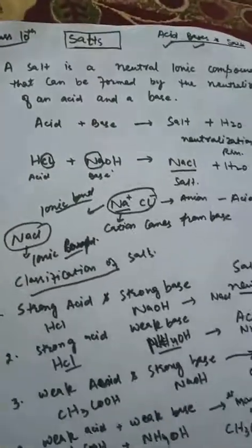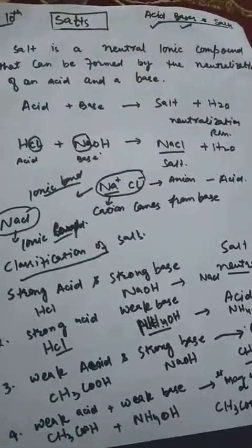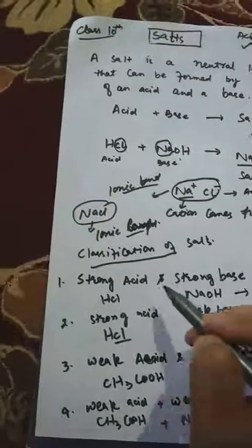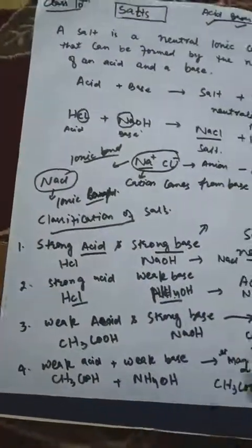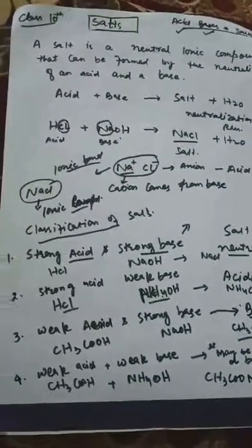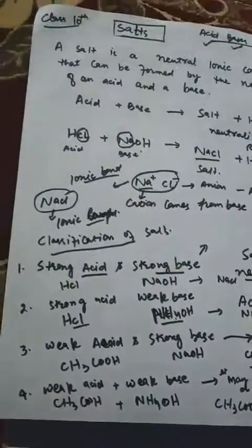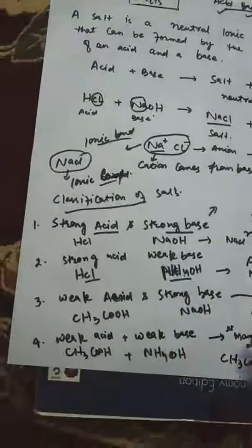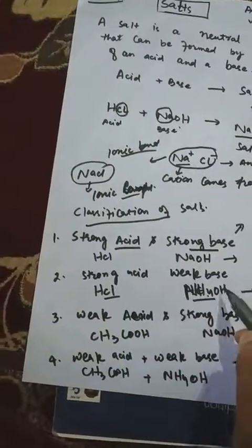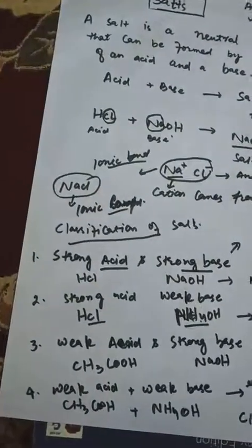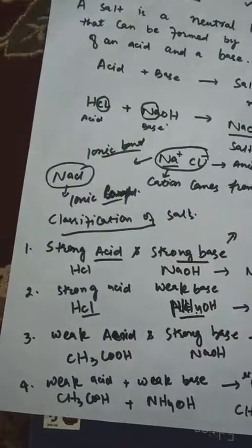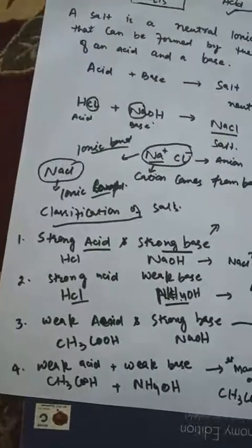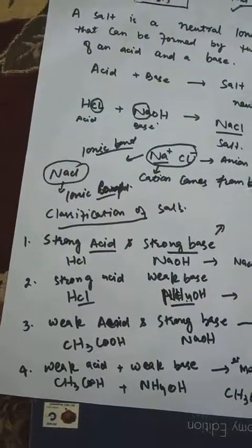Now remember: if we dissolve salt of a strong acid and strong base in water, the solution will be neutral, meaning pH equals 7. If we dissolve salt of strong acid and weak base, the solution pH will be less than 7. If we dissolve salt of weak acid and strong base, the solution pH will be greater than 7.